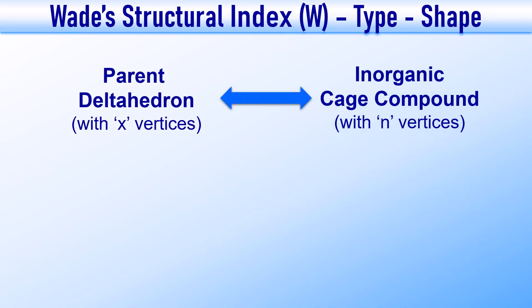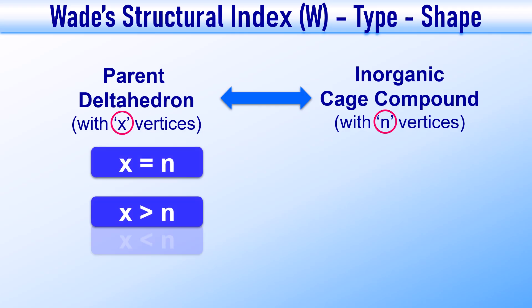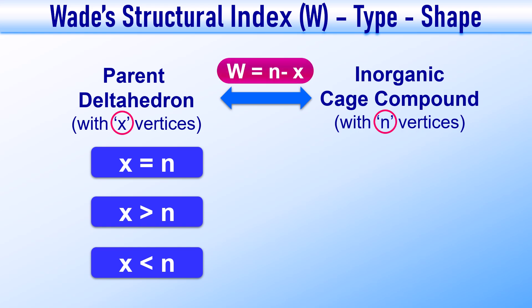The structure of an inorganic cage compound with N vertices is related to a parent deltahedron having X vertices. This parent deltahedron is like an ideal framework from which the actual cluster is formed. This relationship can happen in three ways: sometimes the number of vertices remains the same (X = N); sometimes one or more vertices are missing (X > N); and in some cases extra vertices are added (X < N). The difference N minus X is called the Wade's structural index, represented by W.